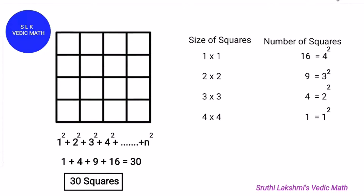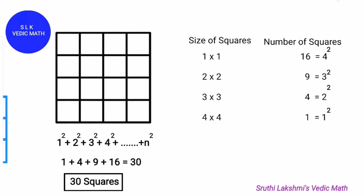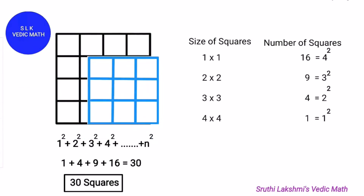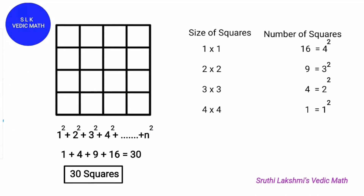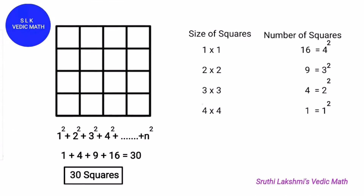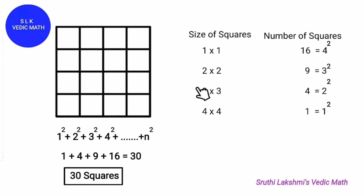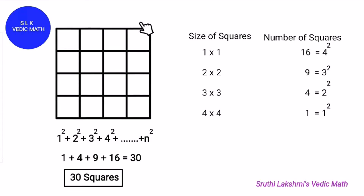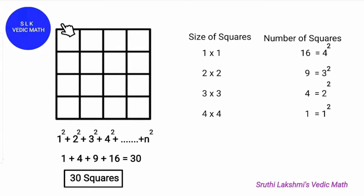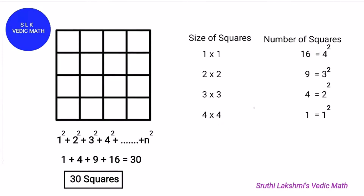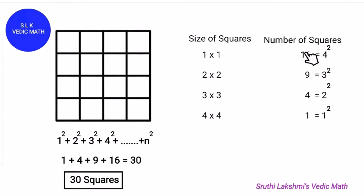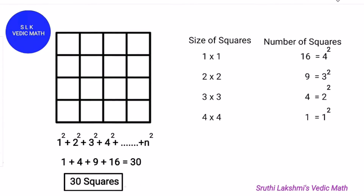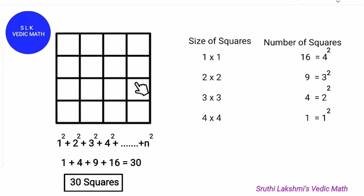Now find how many 3 by 3 squares there are: 1, 2, 3 and 4. So there are 4 three-by-three squares. Now we have to find how many 4 by 4 squares there are. The big square is the 4 by 4 square, so there is 1 four-by-four square. When we add all these numbers together — 16 + 9 + 4 + 1 — we get 30. So there are 30 squares in this 4 by 4 grid.